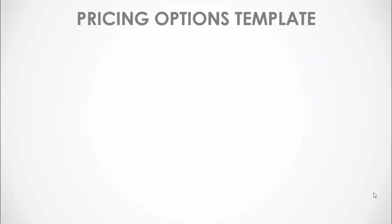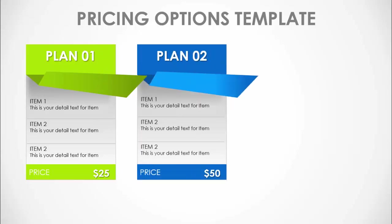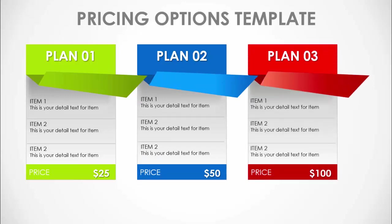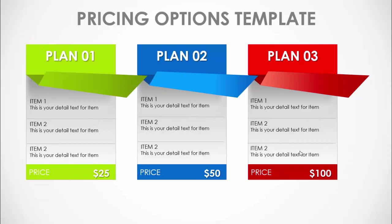In today's tutorial I am going to show you how to make three pricing options infographic slide in PowerPoint. When I click it will reveal the first plan — plan one with the detailed description, price, and green color. On the second click it shows plan 2 with blue color and a price of $50. On the third click, plan 3 appears with a price of $100. You can change the color to silver, bronze, gold, or whatever you need. Let's see how to do this in PowerPoint.